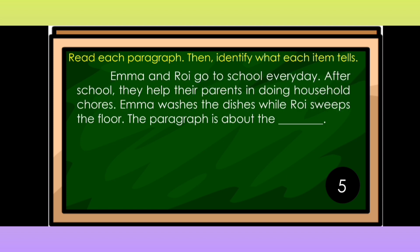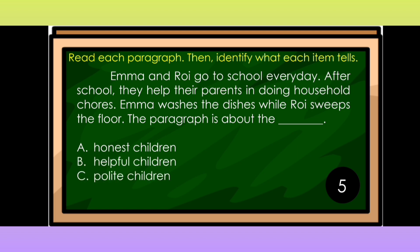Another paragraph. Emma and Roy go to school every day. After school, they help their parents in doing household chores. Emma washes the dishes while Roy sweeps the floor. The paragraph is about: A. Honest Children, B. Helpful Children, or C. Polite Children. If your answer is B, helpful children, then you are right. Emma and Roy help their parents in doing household chores, so the paragraph is all about helpful children.